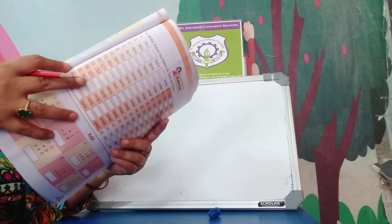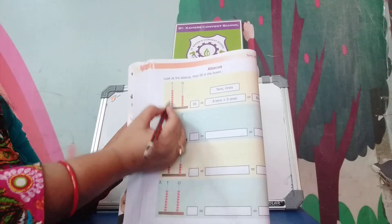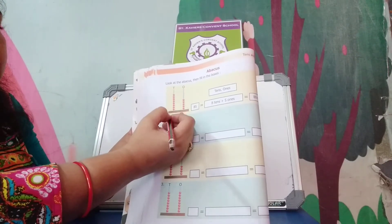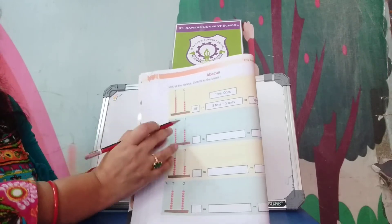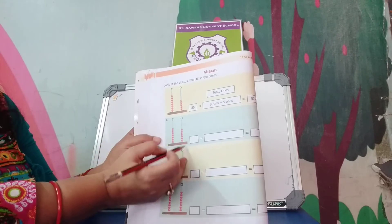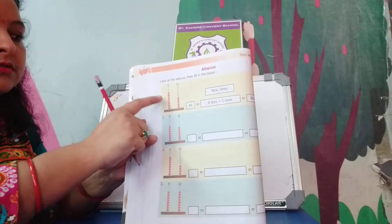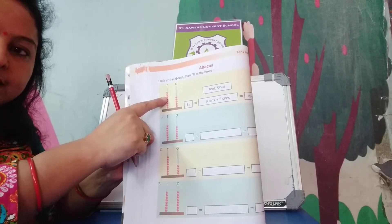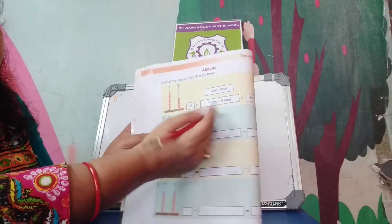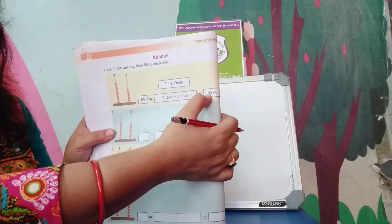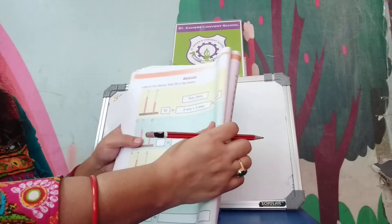Now on page number 76 — abacus. Here are 2 sticks with balls. Small balls are fitted in these 2 sticks. 1 stick is for tens and 1 stick for ones. How many tens? Count: 1, 2, 3, 4, 5, 6, 7, 8 — so 8 tens is equal to 80. And how many ones? 1, 2, 3, 4, 5 — 5 ones. 8 tens plus 5 ones makes 80 plus 5 is 85.